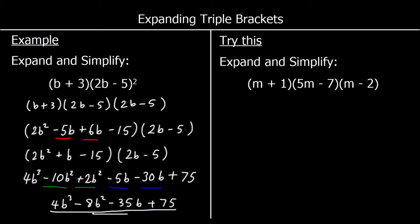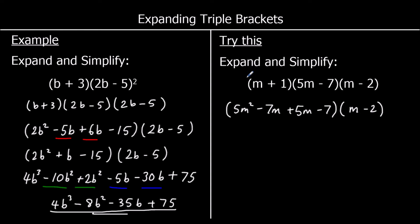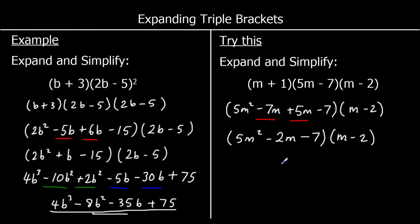A question for you to try — have a go at this one and press play when you're ready to carry on. So we're going to start with expanding and simplifying the first two brackets. m times 5m is 5m squared. m times negative 7 is negative 7m. 1 times 5m is 5m. And 1 times negative 7 is negative 7. The last bracket is still there. Collecting like terms: we've got 5m squared, negative 7 plus 5 which is negative 2, so negative 2m, minus 7. And the last bracket is still (m - 2).